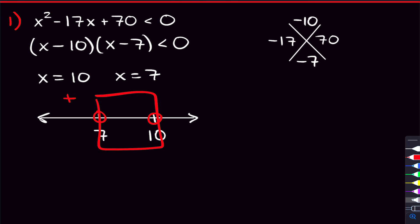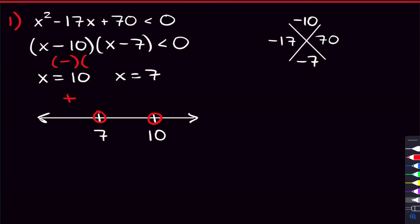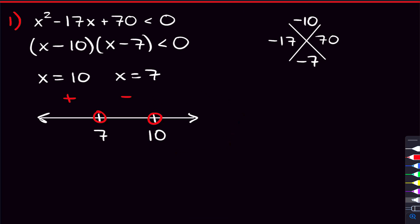The next region is from seven to 10, so let's pick eight. Plugging eight into the first factor gives us eight minus 10, which is negative two — a negative number. Plugging eight into the second factor gives us eight minus seven, that's one — a positive number. So we get a negative times a positive, which is a negative number. Lastly, we check the third region by picking a number greater than 10 — let's pick 11. Eleven minus 10 is one, positive. Eleven minus seven is four, positive. Positive times positive is a positive number.